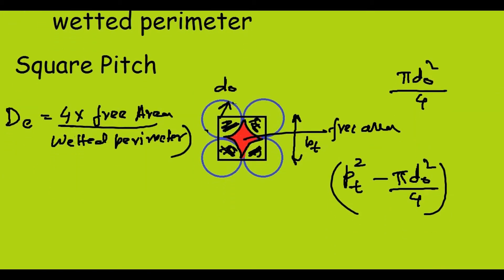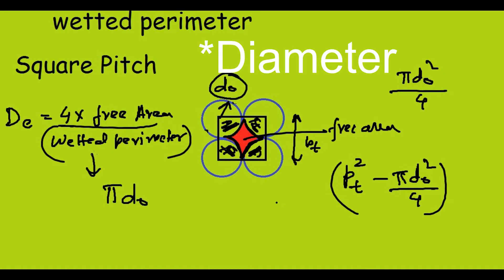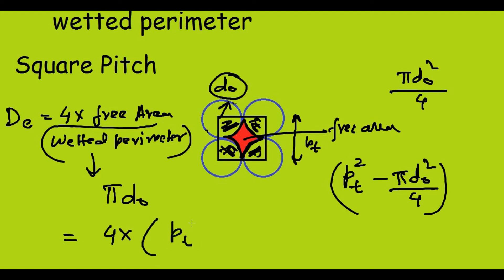Now I have the free area. All I need is the wetted perimeter, which is the perimeter of the black shaded portion — the rim of this red shaded region. I have 4 quarter circles, which add up to one full circumference, so the wetted perimeter equals πDO. This gives the equivalent diameter for square pitch as: De = 4(Pt² − πDO²/4) / (πDO).